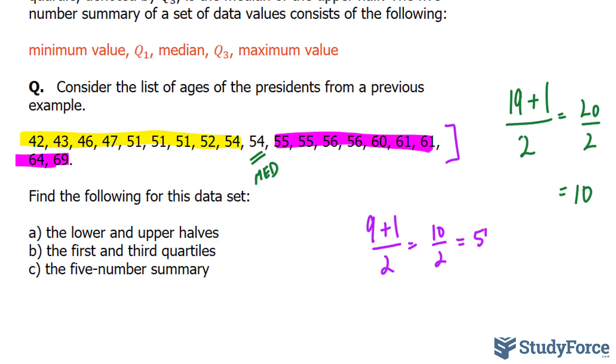The fifth observation is the midway point, and that will serve as the first quartile. So 1, 2, 3, 4, 5, 51.